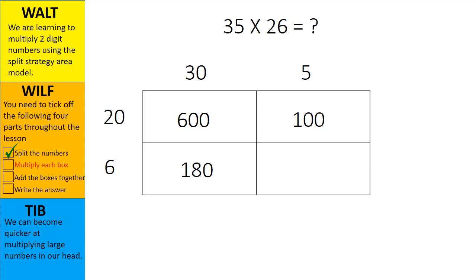Now we can do the final box, 6 multiplied by 5. These are single digit numbers and don't have any zeros so we can just multiply it as it is. 6 multiplied by 5 equals 30. We can now tick this stage off our checklist.